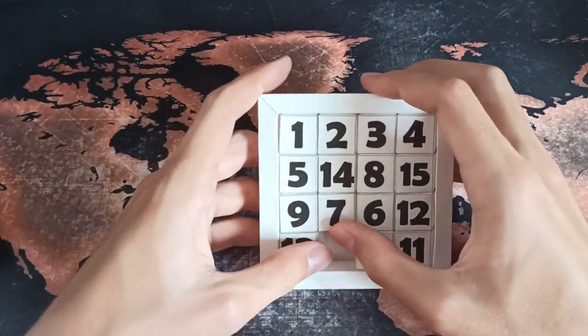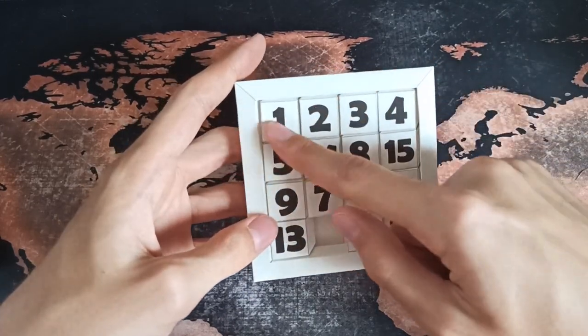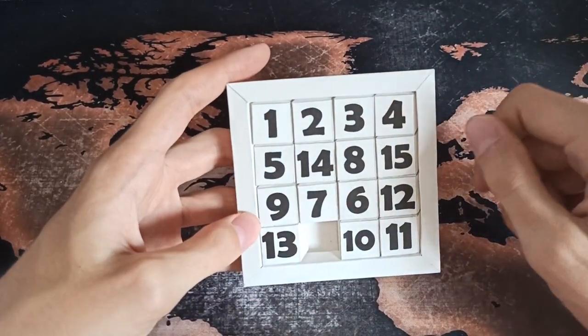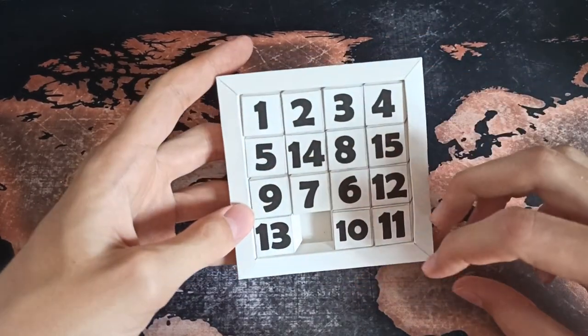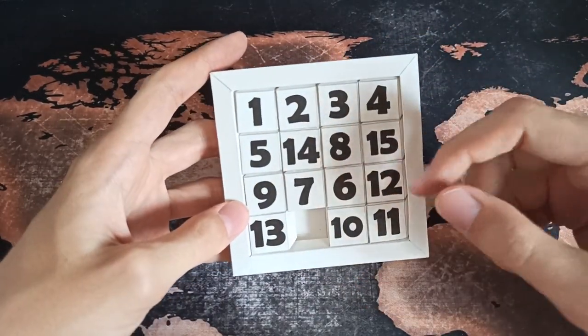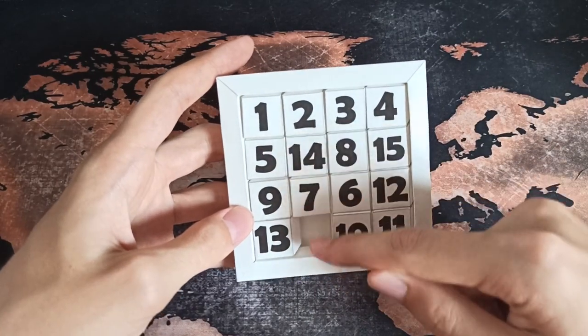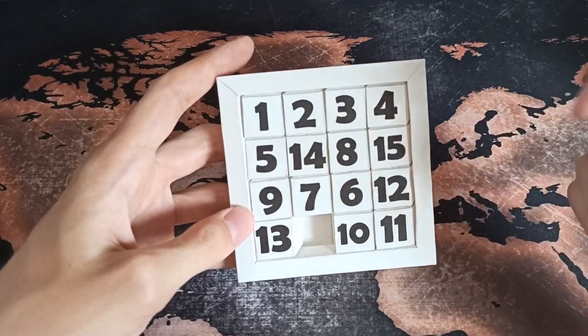Now the first step is done and all that's left to do is to solve these inner 8 pieces. For this I'm using a similar method again which means I'm solving the first column and the first row of the rest and then there are only 3 pieces left.